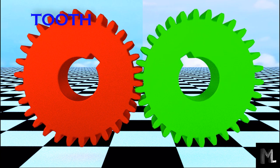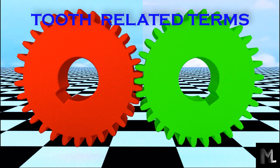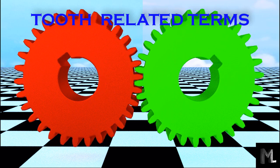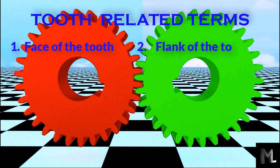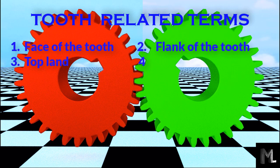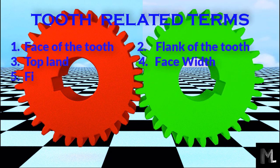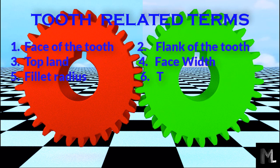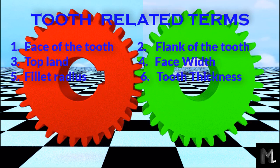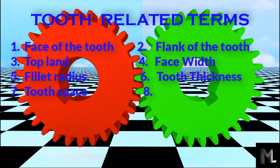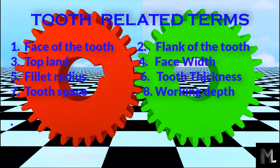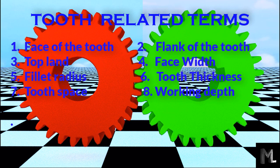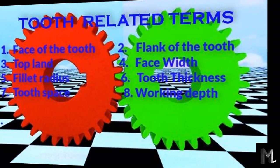Now we will discuss about the tooth related terms. The terms are: number one is face of tooth, number two is flank of the tooth, number three is top land, number four is face width, number five is fillet radius, number six is tooth thickness, number seven is tooth space, and number eight is working depth.